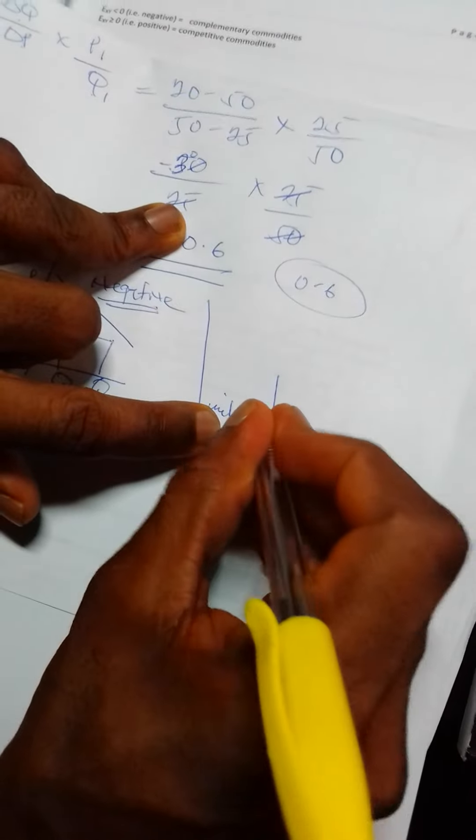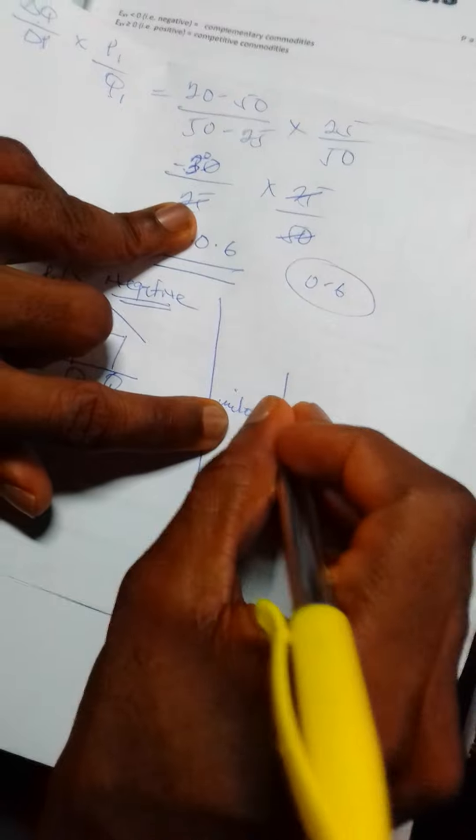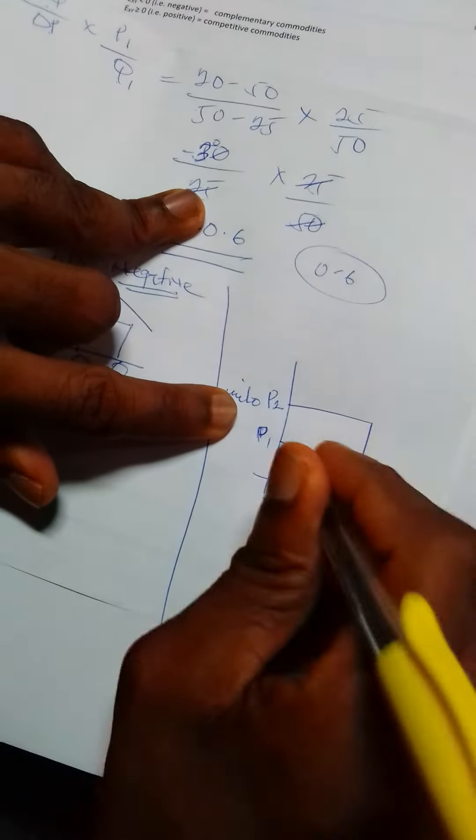But when the price of Milo increases to P2, they will now start to buy less of Milo and shift their demand to Bournvita. So they will buy more Bournvita at their Q2.